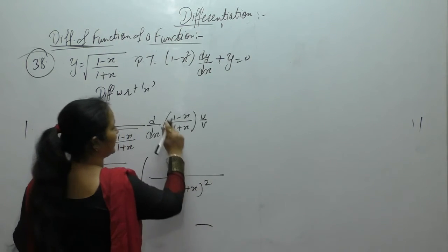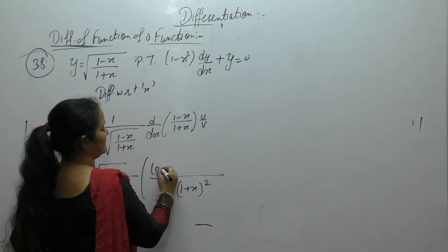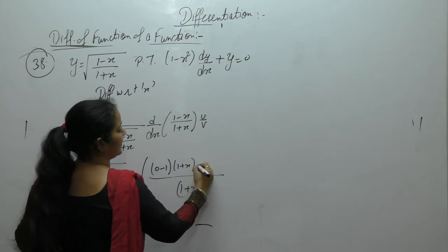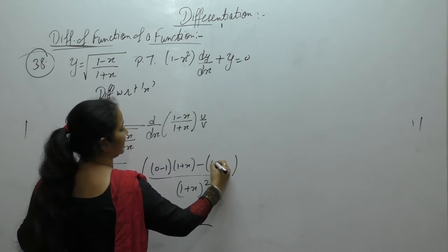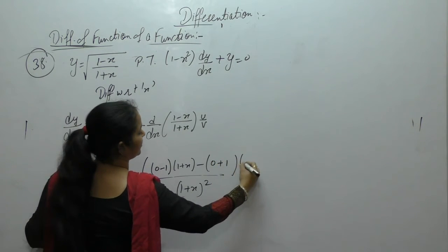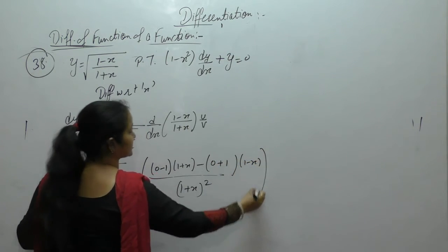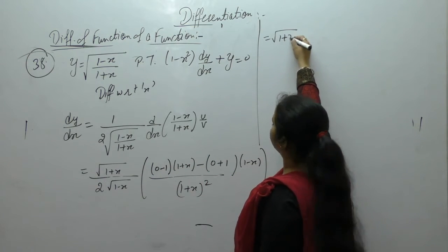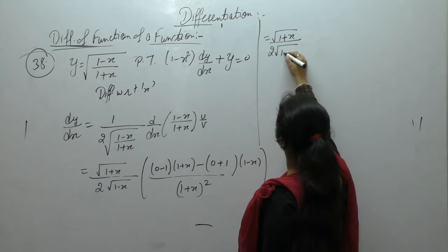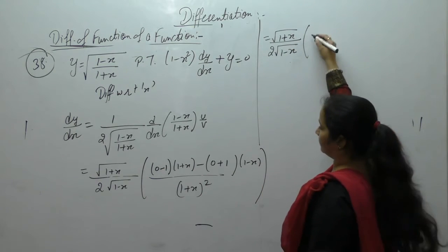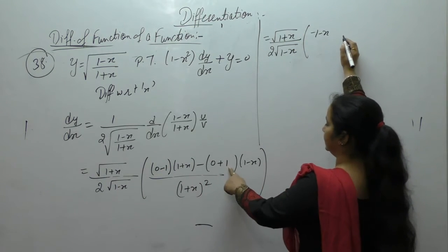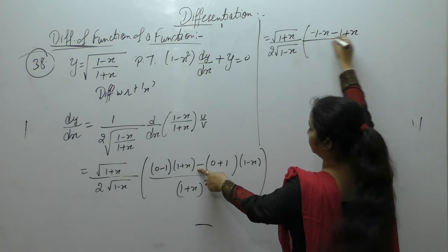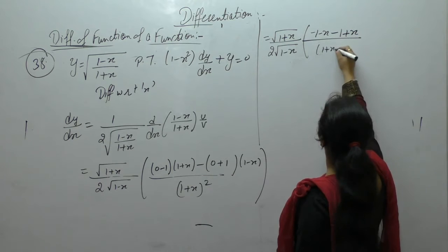Here, u dash: derivative of 1 is 0, derivative of minus x is minus 1, times v as it is. Minus v dash: derivative of 1 is 0, derivative of x is 1, times u as it is. So we get √(1 plus x) upon 2√(1 minus x), minus (1 minus x) minus (1 minus minus plus x), upon (1 plus x)².